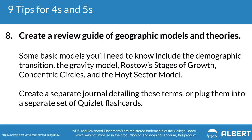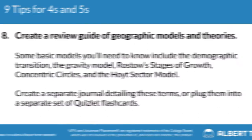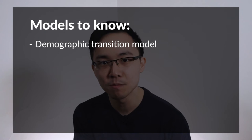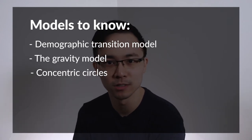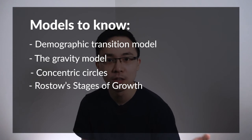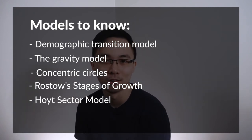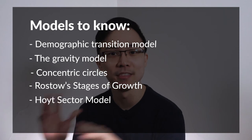Our next step is to create a review guide for geographic models as well as theories. Many past FRQs and multiple choice questions will refer to these different models and theories, so it's really important that you know these things cold. You not only need to know the definitions, but how to apply them to real world situations. This means understanding different models like the demographic transition model, the gravity model, and concentric circles. You also need to know things like Rostow's stages of growth or the Hoyt sector model. The best way to start your mastery of these is to use the Quizlet tip while also combining it with real world applications by working through some past free response questions.